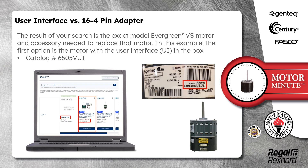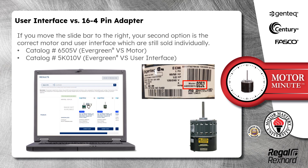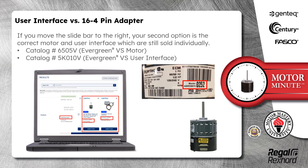In this example, the first option is the motor with the user interface in the box, catalog number 6505-VUI. If you move the slide bar to the right, your second option is the correct motor and user interface, which are still sold individually. Catalog numbers 6505-V is the motor and 5K010-V is the user interface.